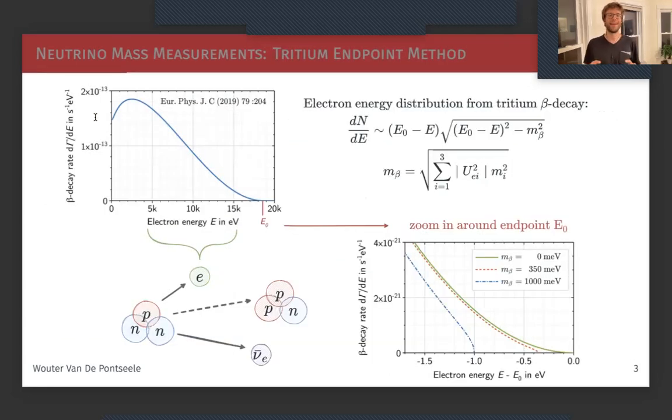So a bit more about this direct method. On the bottom left you have a tritium atom which beta decays into a helium nucleus, an electron, and a neutrino. We are not able to measure all these neutrinos, so we're focusing on the electron and we measure the kinetic energy of the electron to build up a distribution.